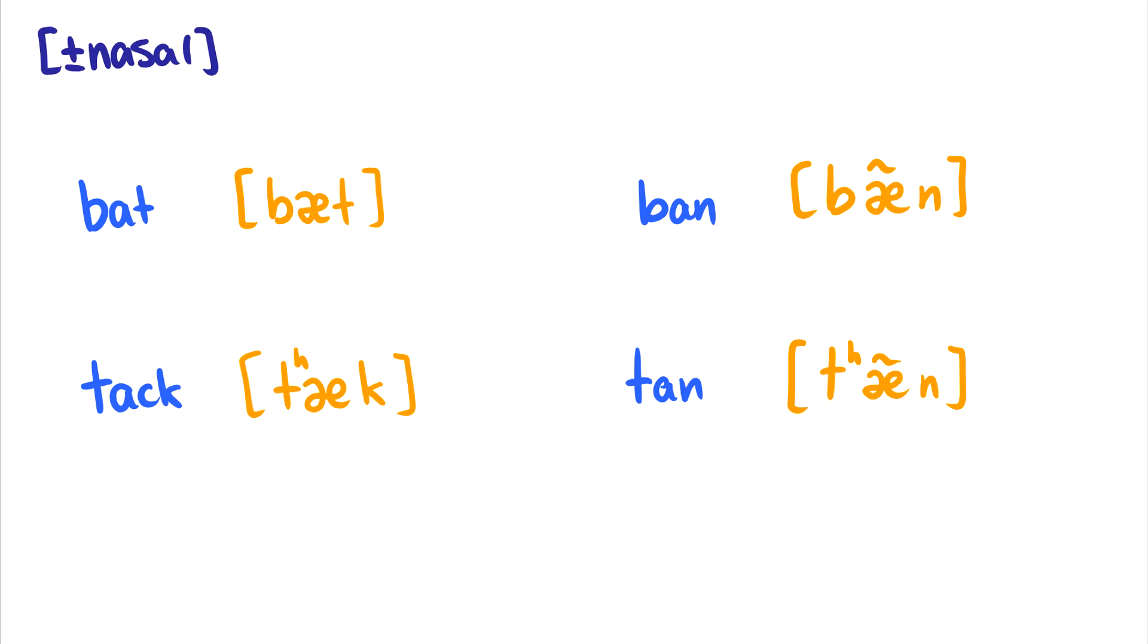I want you to say those words out loud. Bat, ban, tech, tan. What do you notice? Well you notice that the vowel in ban and tan is kind of nasalized. And that's what this little squiggle above means. This little squiggle on a vowel means it's nasalized. That means that the vowel has a plus nasal feature while the vowel in bat has a minus nasal feature. Of course even this n here is plus nasal.